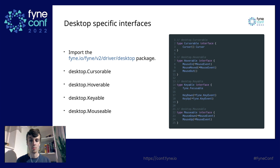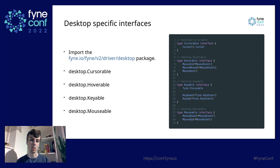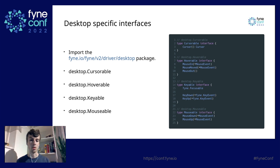The desktop.Keyable interface extends fyne.Focusable with added KeyDown and KeyUp methods — KeyDown is called when a key is pressed and KeyUp when it is released. We also have the desktop.Mouseable interface, similar to Keyable but for the mouse: MouseDown is called whenever a mouse button is pressed and MouseUp is called when the mouse press is released.